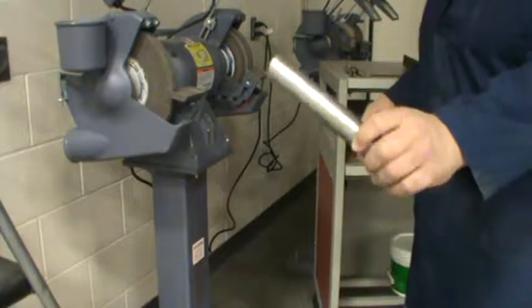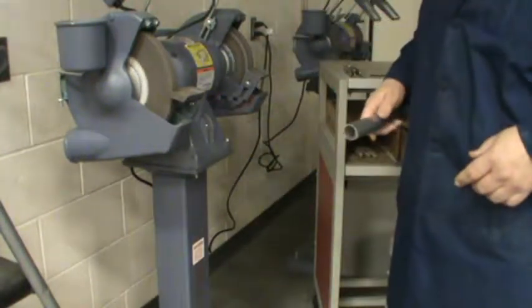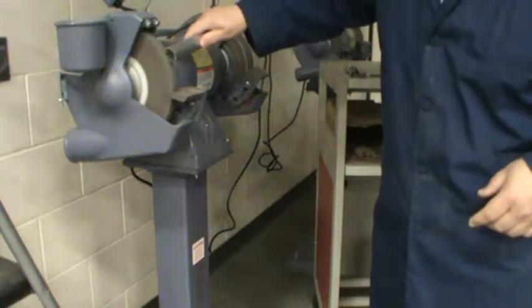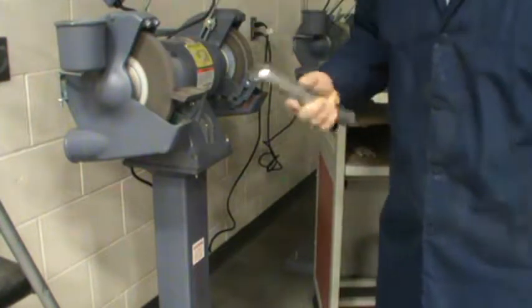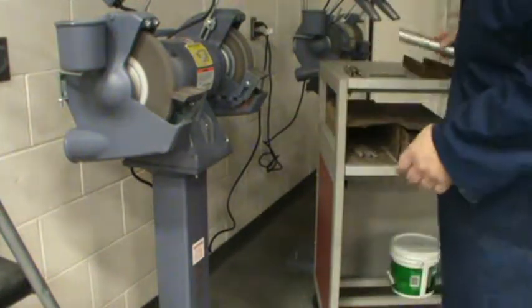There are some metals, like this piece of aluminum tubing here. Aluminum is not iron-based. As you can see, there's absolutely no sparks that come off of that.